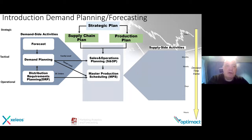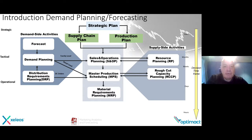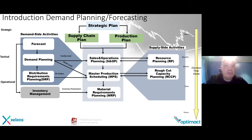In demand planning, we use forecast and distribution requirements planning, which give input to sales and operations planning and also to master production scheduling. You also have resource planning and rough cut capacity planning, which give input to your S&OP and MPS processes. Then master production scheduling gives input to requirements planning. There is a close link between forecast and inventory management — based on your forecast you should calculate inventory parameters based on forecast and also on the life cycle of your product.